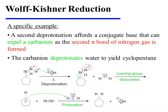A second deprotonation affords a conjugate base that can expel a carbanion as the second pi bond of nitrogen gas is formed. This carbanion then deprotonates water to yield the fully reduced product, cyclopentane.